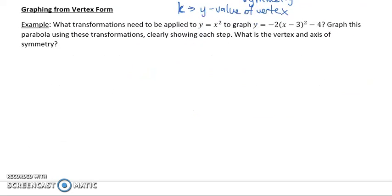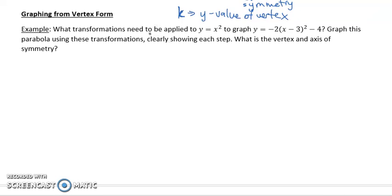Let's look at graphing from the vertex form. So what transformations need to be applied to Y equals X squared to graph Y equals negative 2 X minus 3 squared minus 4? Graph this parabola using these transformations, clearly showing each step. What is the vertex and axis of symmetry? So what we need to do here is we first recognize that the A value is negative 2. The H value is positive 3, because our general form is X minus H. And then the K value is equal to negative 4.